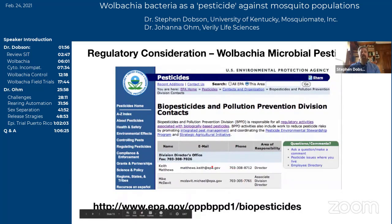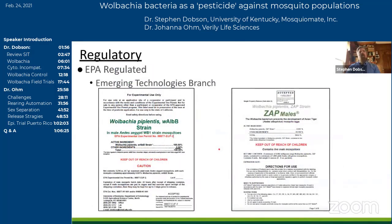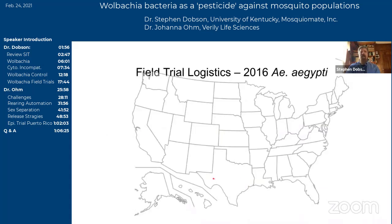We took this data to the EPA and requested a permit to conduct field trials. This took place around 2012, when we started talking with the Biopesticides and Pollution Prevention Division. We've subsequently been adopted by a new branch of the EPA — the Novel Technologies Branch. After about a year or two of working with them, we received experimental use permits, initially for Aedes albopictus and then subsequently for Aedes aegypti. This is the WB1 strain — which you'll also hear about in Dr. Ohm's talk — and this is the ZAP strain of albopictus.